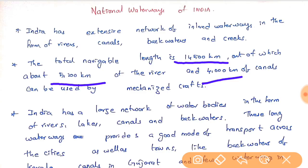Why are waterways needed? If you take London, it has many inland waterways — they built canals artificially, making streets of water. Since the industrial revolution happened first in London, waterways were chosen for transport of goods and cargo because waterways are the cheapest mode of transport compared to airways, railways, and roadways.